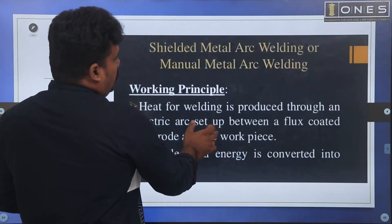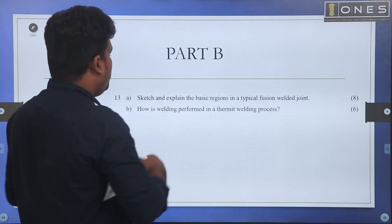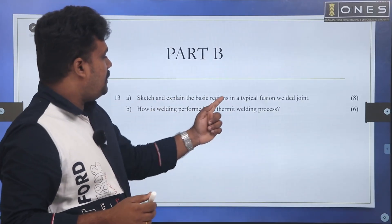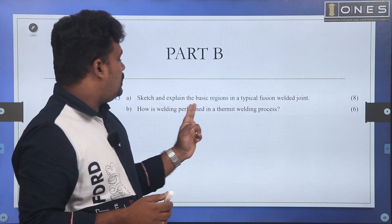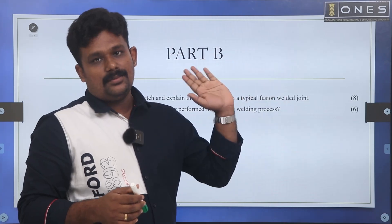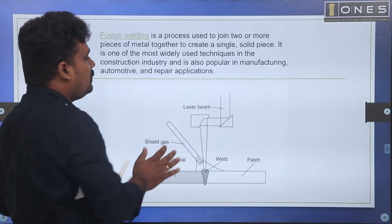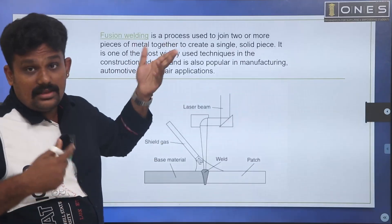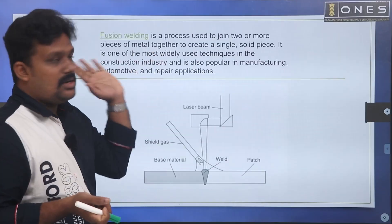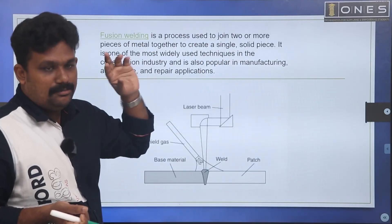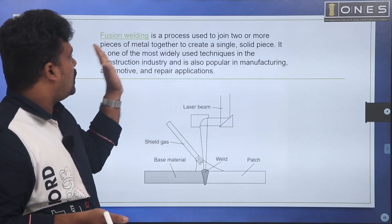Let's go to Part B, question 13. Sketch and explain the basic regions in a typical fusion welded joint. What is a fusion welded joint? It is used to join two or more pieces of metal together to create a single solid piece — that is fusion welding.